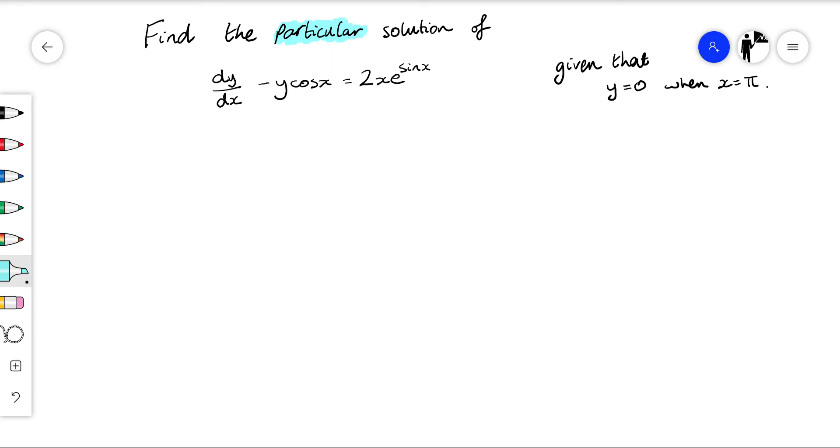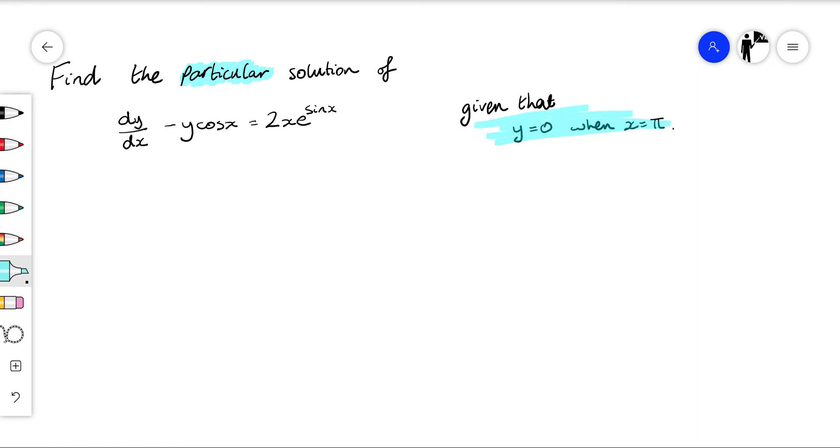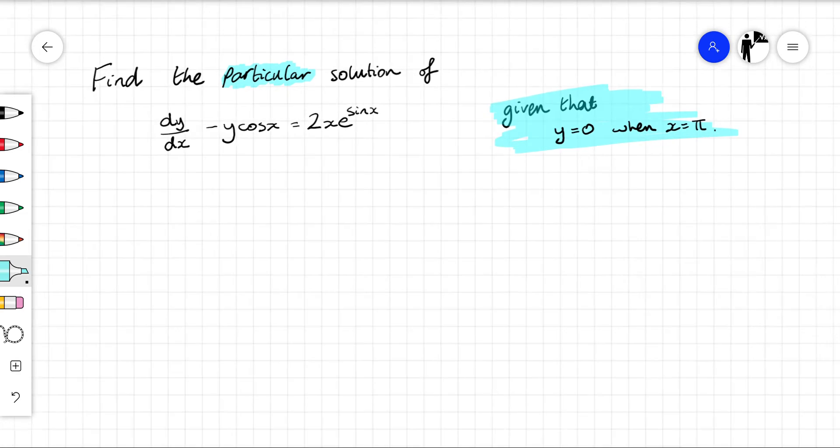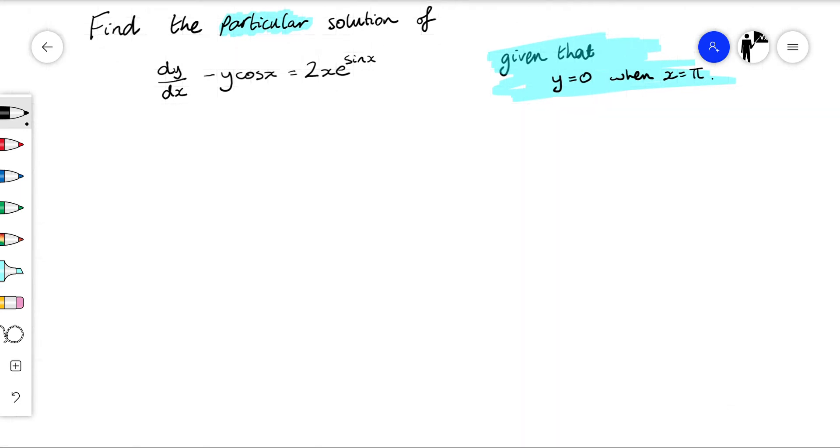All we're going to do here is get it to y equals, then substitute in our initial conditions to find out what that constant of integration is based on these values, similar to what you're doing in higher math. We'll find our general solution first as if nothing has changed.